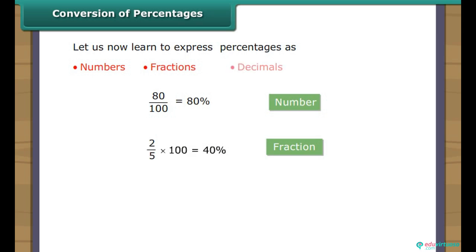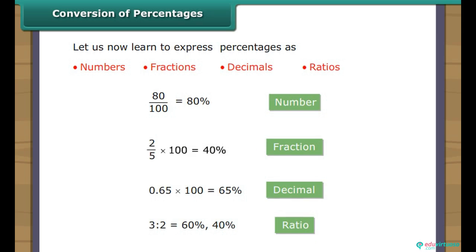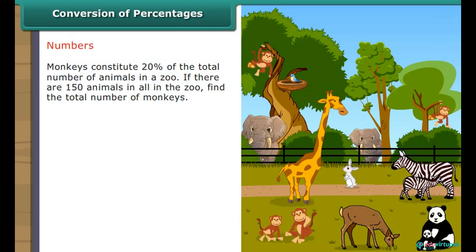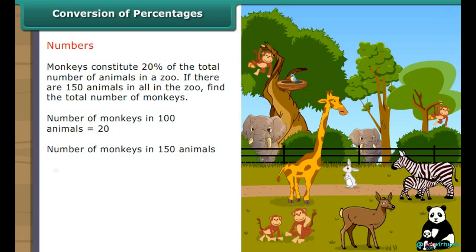We can express numbers, fractions, decimals, and ratios as percentages. Let us now learn to express percentages as numbers, fractions, decimals, and ratios. Monkeys constitute 20% of the total animals in a zoo. If there are 150 animals in all, find the total number of monkeys. Number of monkeys in 100 animals equals 20. Number of monkeys in 150 animals equals 20 upon 100 into 150, which equals 30. There are 30 monkeys in the zoo.